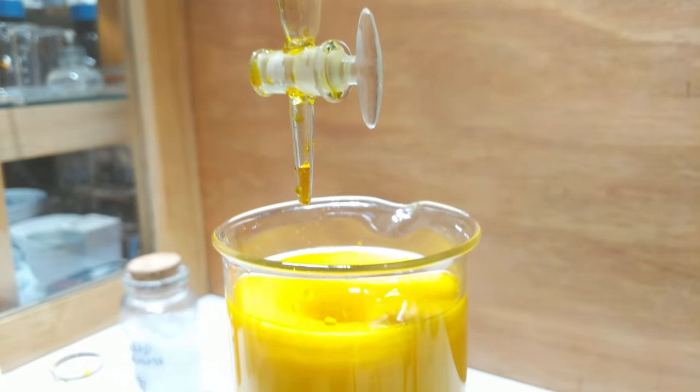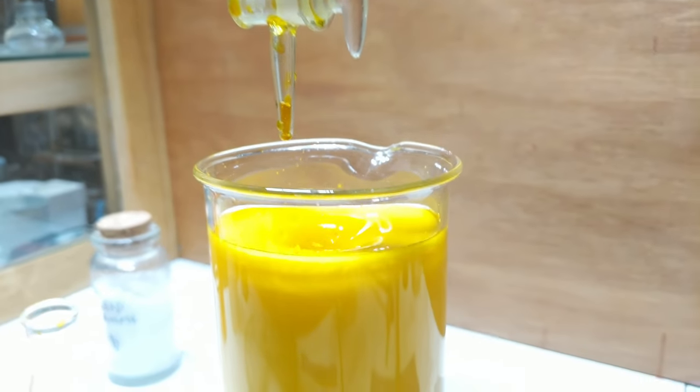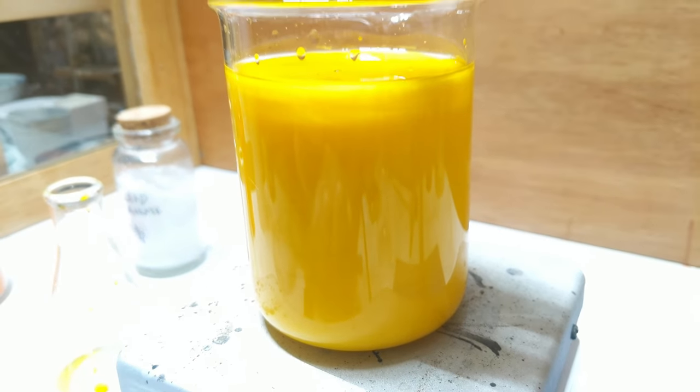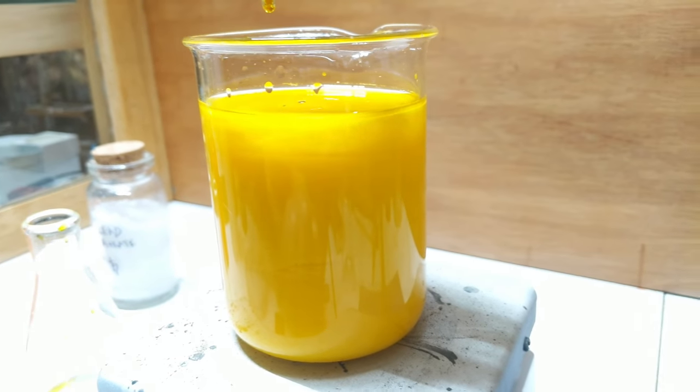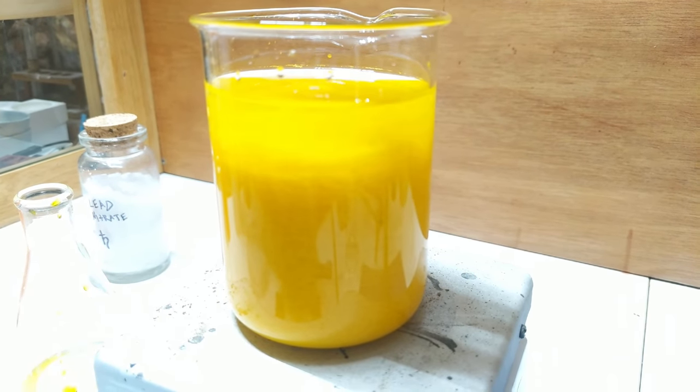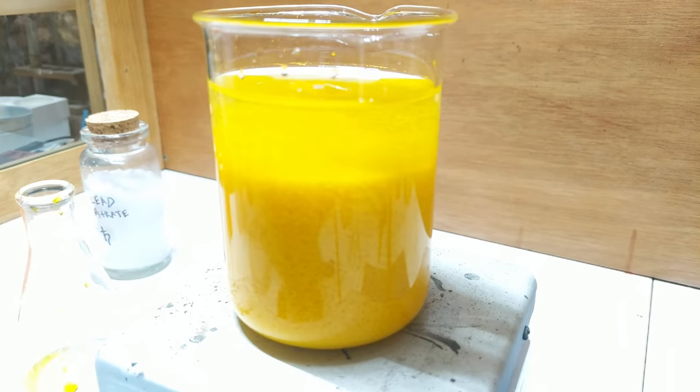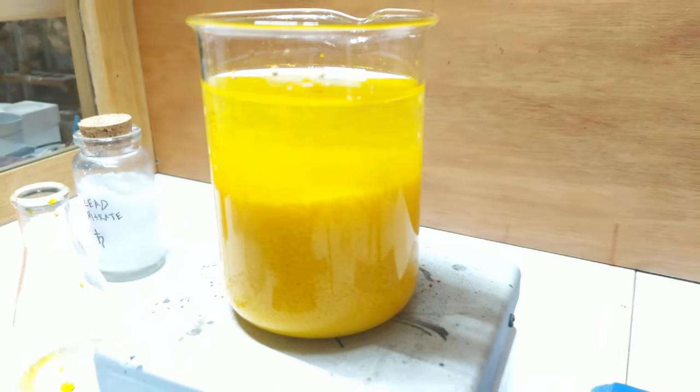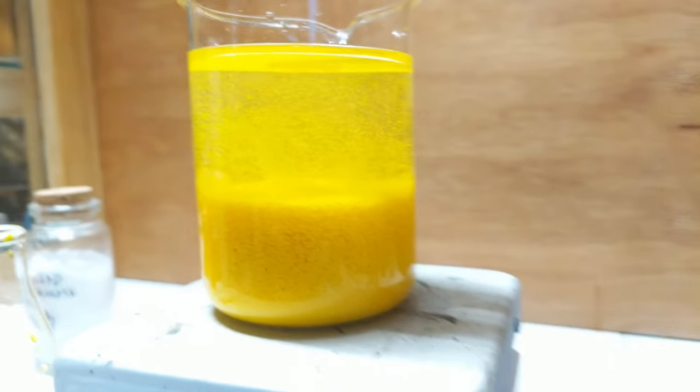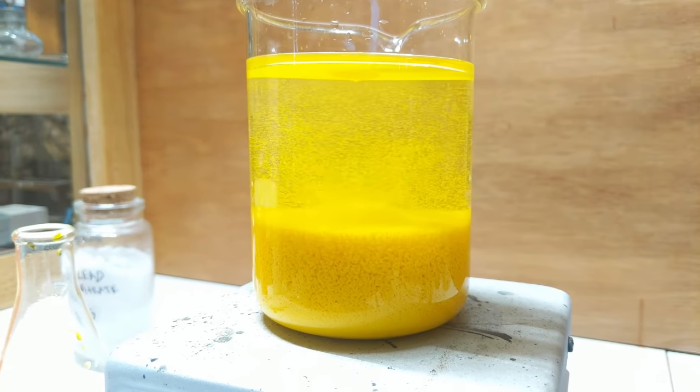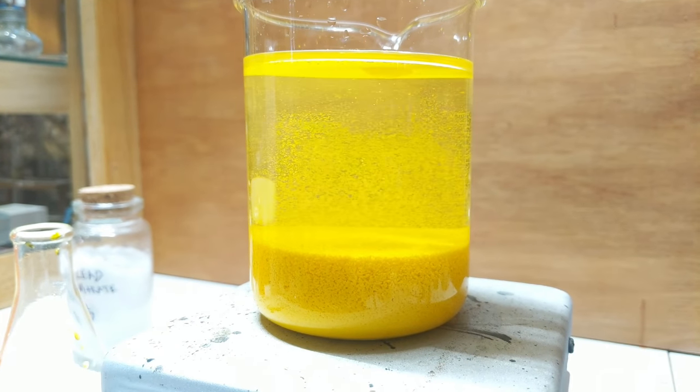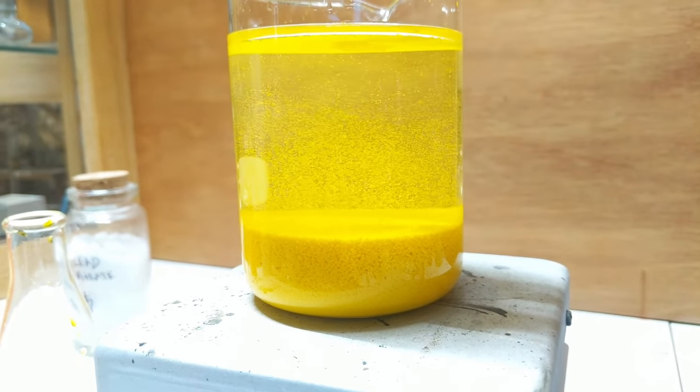So now all of the chromate solution has gone in, and as we stop the stirring, you can see all the precipitate. And the lead, being lead, is heavy and wants to settle out very quickly. So you can see it there, settling down the bottom. Beautiful.